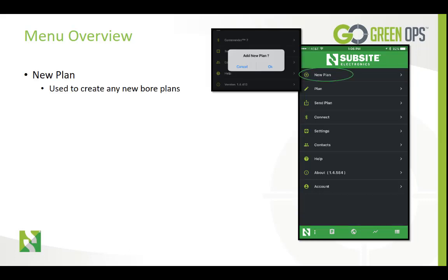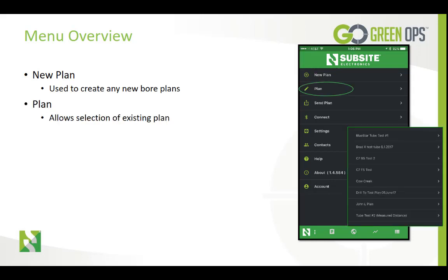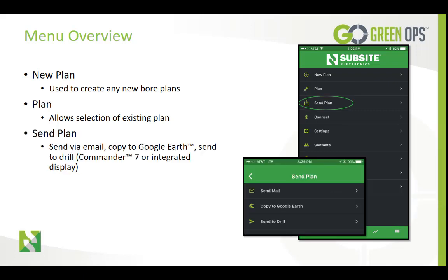Beginning with New Plan — this allows the user to create a new board plan. The Plan part of the menu item allows selection of an existing plan. Send Plan allows the user to choose between sending the plan via email, which comes in handy when a plan needs prior approval before beginning the board. If using a GPS device while creating the plan, you can view the plan on Google Earth, and you have the ability to send the plan to the Commander 7 display on the drill.